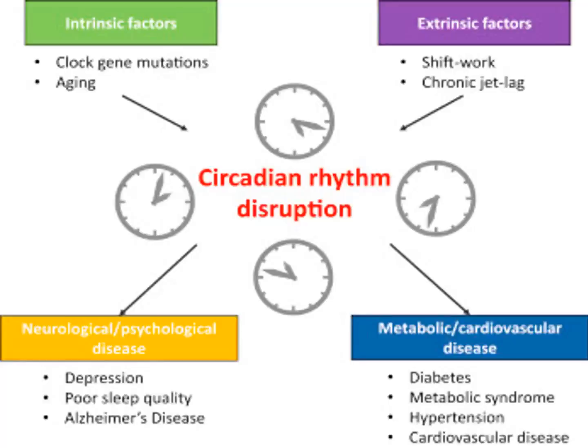Circadian rhythm disruption can occur through intrinsic factors such as gene mutation and aging, or through extrinsic factors such as shift work and chronic jet lag.